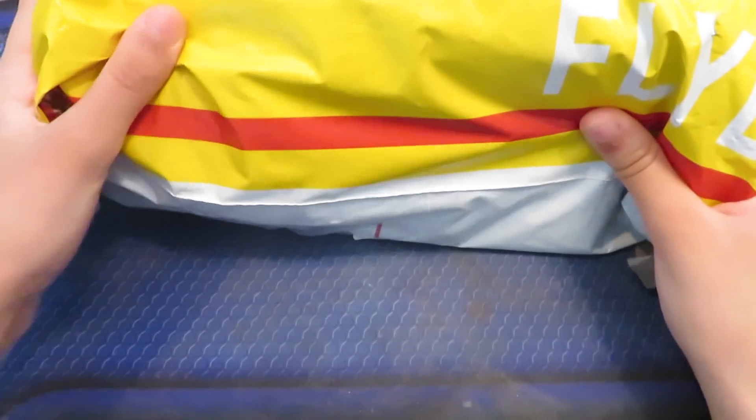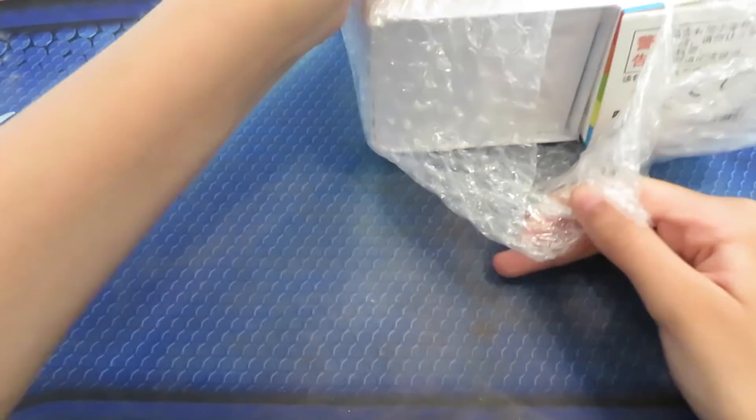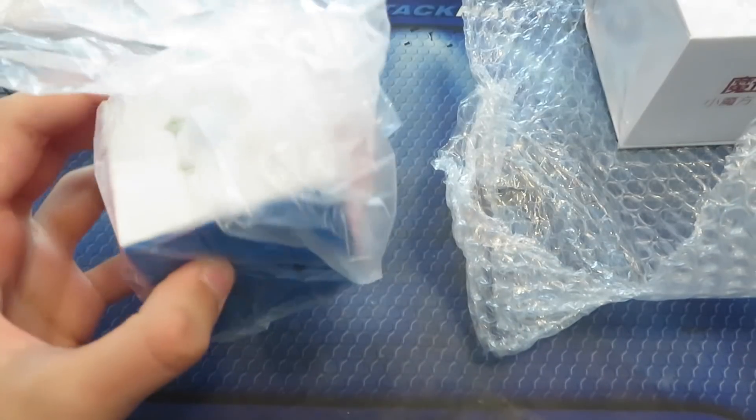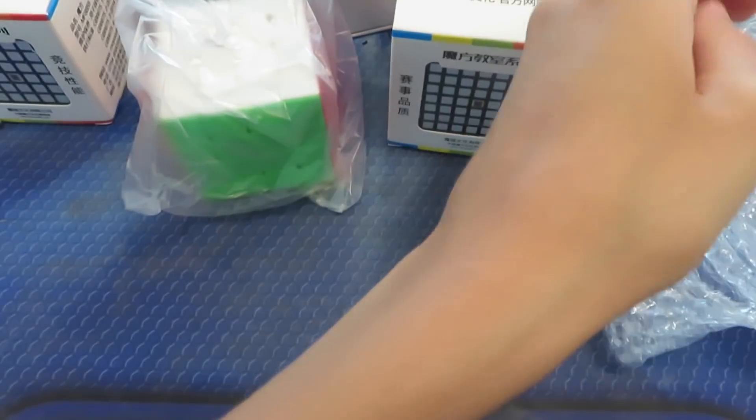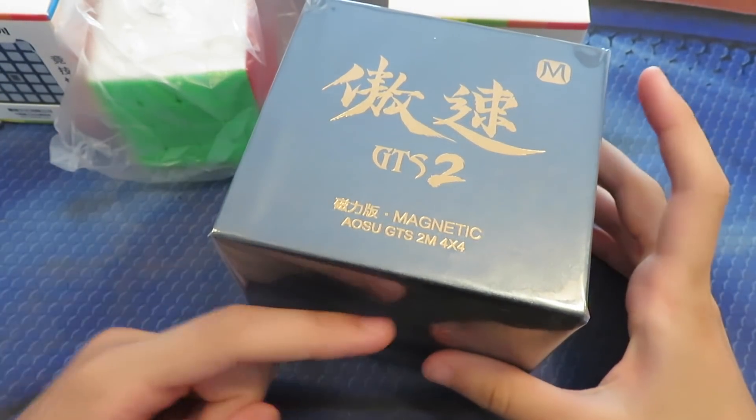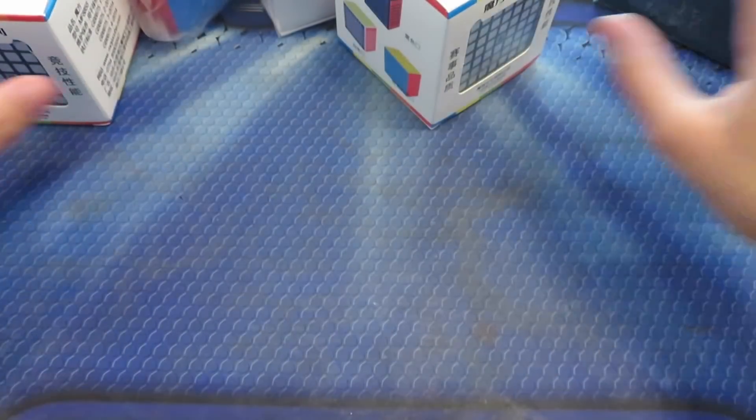Hey guys, today I have a big unboxing from Moyu. Alright, so here we have MF8, some 3x3, looks like these are just GTS3s I guess, 4x4, we also have the MF9, and lastly we have this is the Alsu GTS2M, so this must also be one. Alright, let's start off with this.